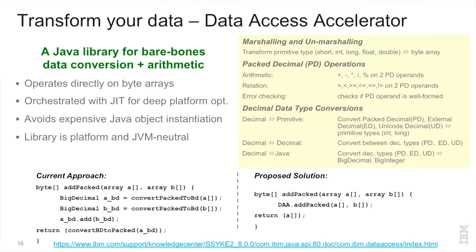This slide talks about one of the technologies we've developed in Java to address a gap in Java accessing data within COBOL copybooks — specifically the packed decimal data type. Packed decimal is a binary-coded decimal data type that is essentially a native primary data type within COBOL and is very pervasive. The common best practice prior to Data Access Accelerator has been to represent it as a byte array or BigDecimal objects within Java, since Java itself doesn't have a native packed decimal data type. Creating BigDecimal objects is overhead, and since they're immutable, any change to a packed decimal value requires creating a new BigDecimal object.